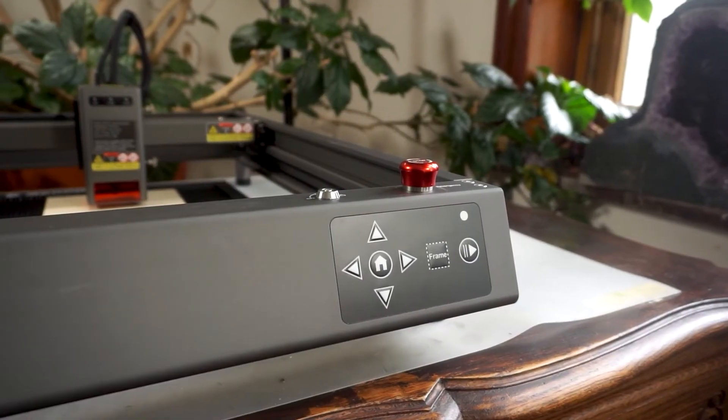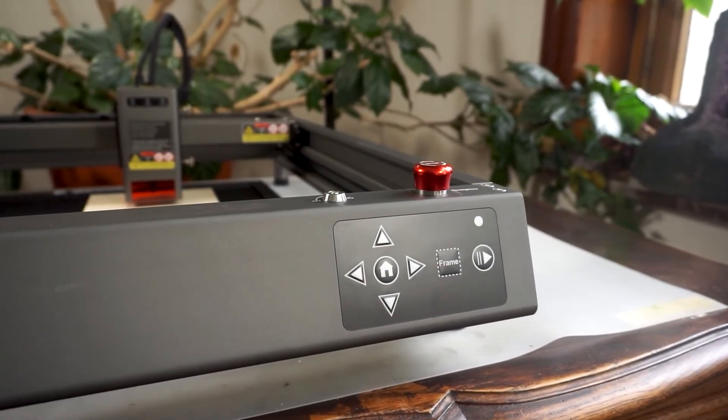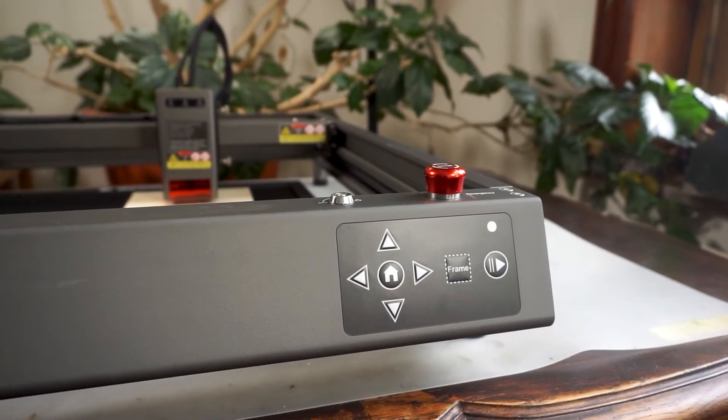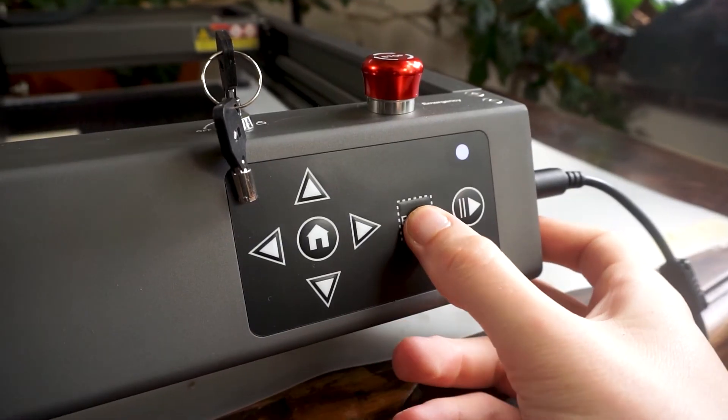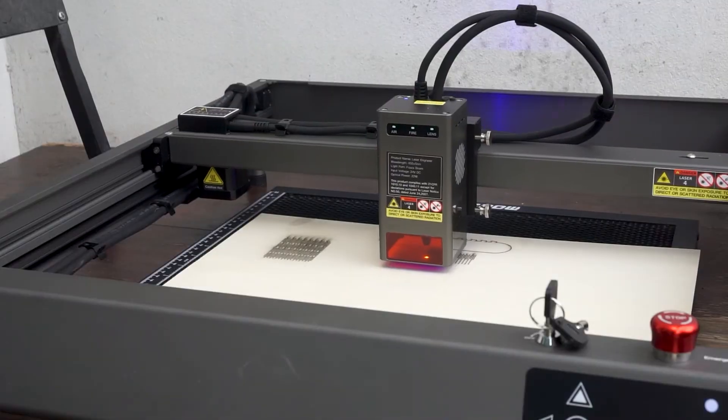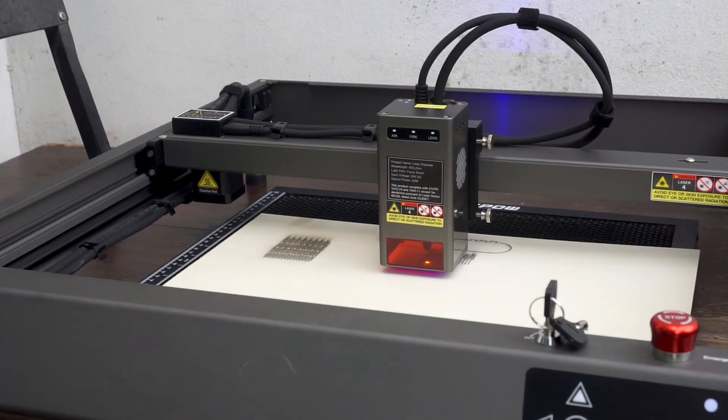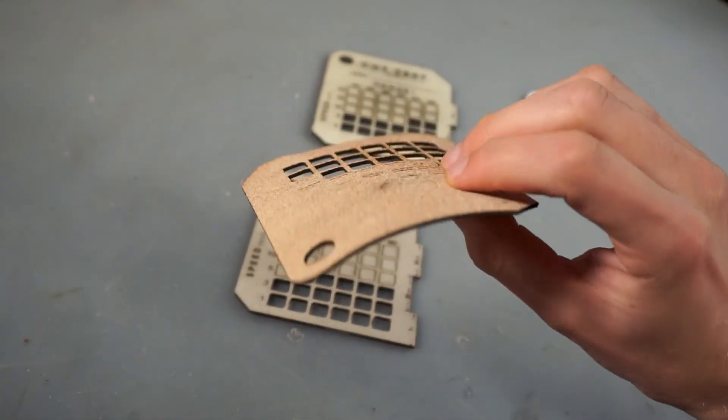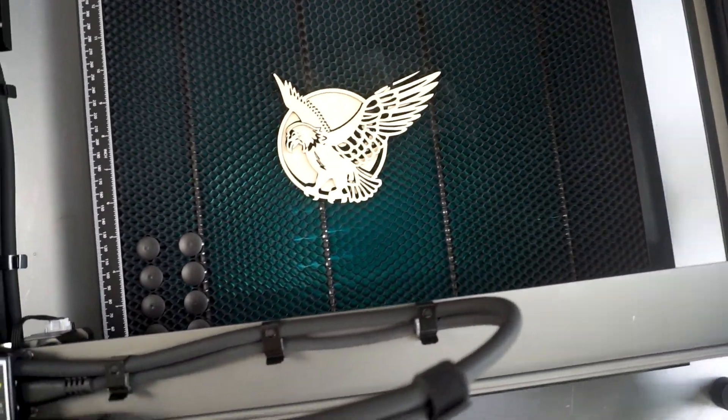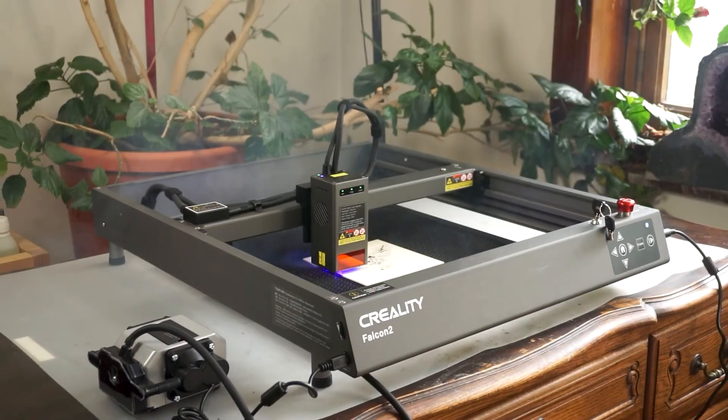However, the lack of a screen and very basic file management can be drawbacks. This machine is ideal for quick and precise cuts on materials like wood, leather and cardboard, but it requires proper smoke management and reinforced eye safety, because the laser isn't enclosed on all sides.